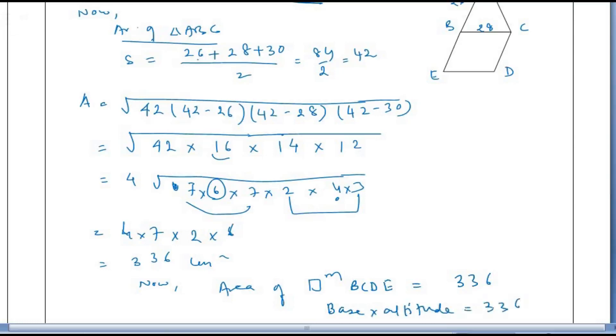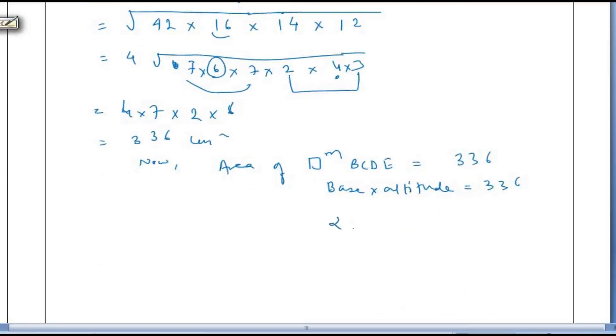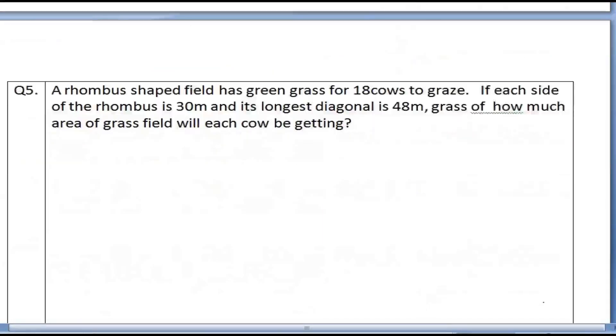Base is 28, which we have seen in the figure. So 28 into altitude is equal to 336. Altitude or height is 336 by 28, which is 12 cm. This is altitude. So height of parallelogram is 12 cm. Clear? Sum completed.